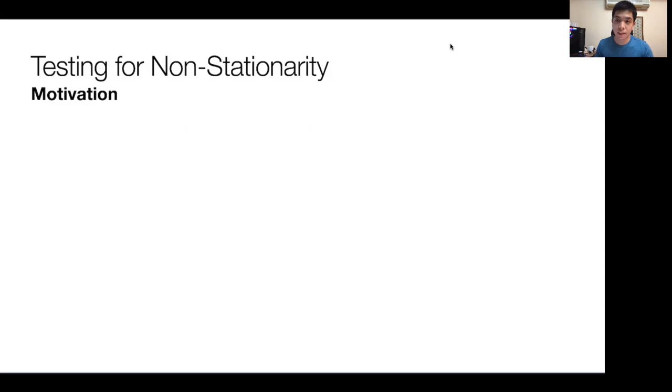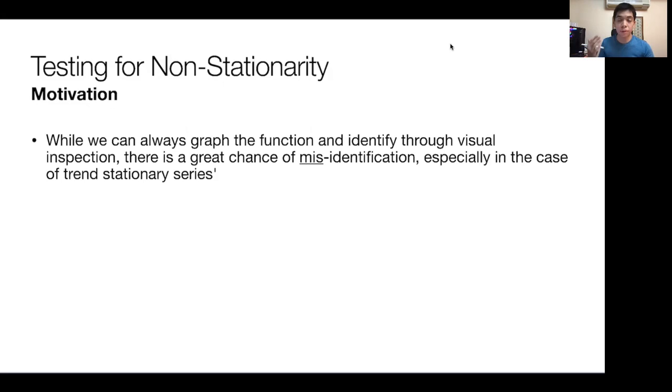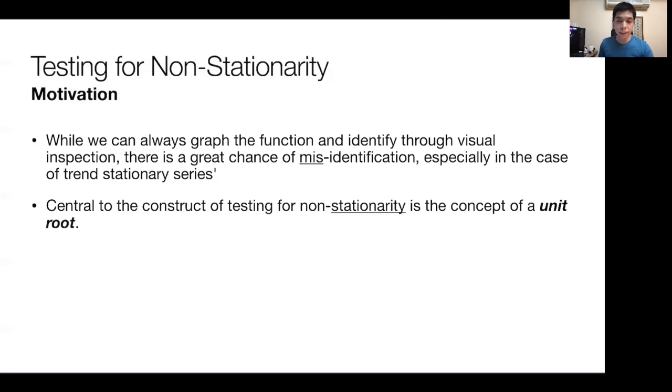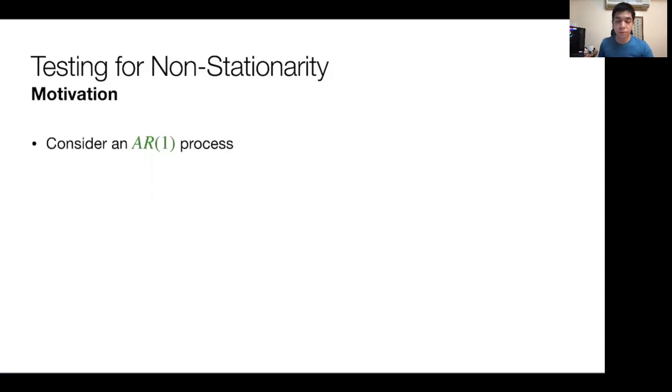Non-stationarity is an inherent problem when dealing with time series models, making it hard to implement traditional autoregressive or moving average processes. While we can always graph to determine if a series is stationary through visual inspection, there's a great chance of misidentification, especially in the case of trend stationary series. Central to the concept of non-stationarity is the concept of a unit root.